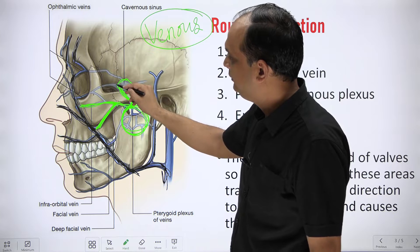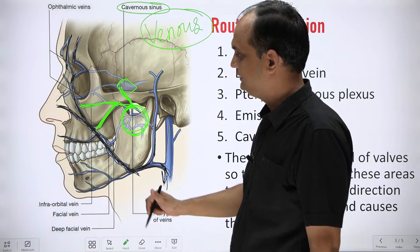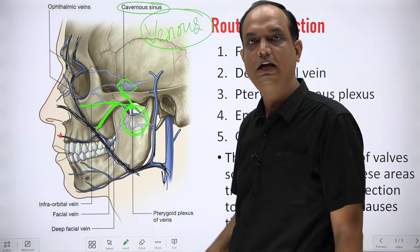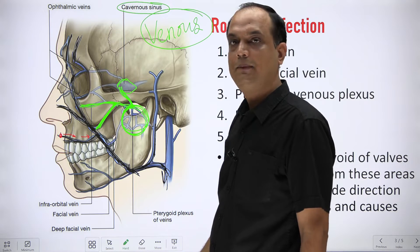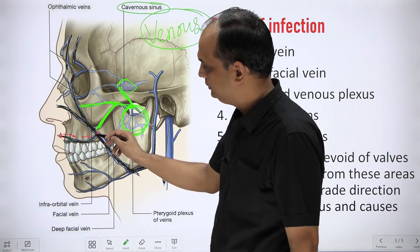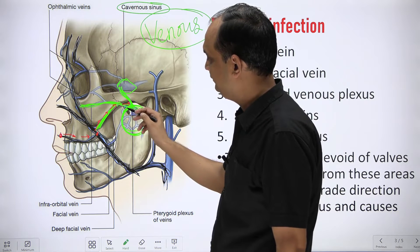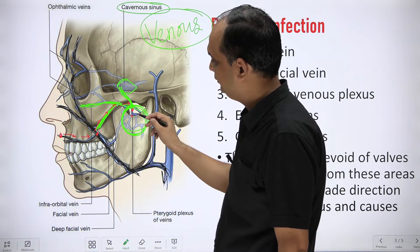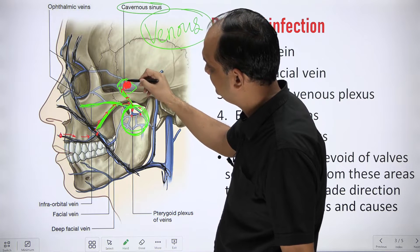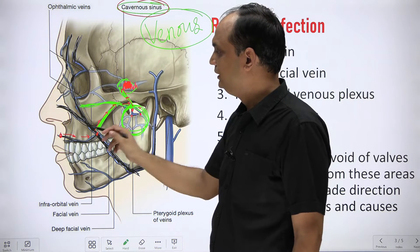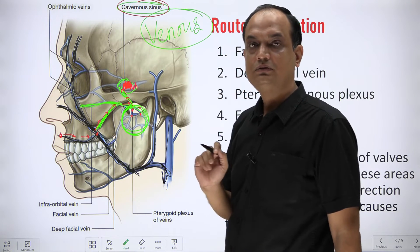From the pterygoid venous plexus, emissary veins connect the extracranial venous plexus to the intracranial dural venous sinus — specifically the cavernous sinus. So the route of infection is: bacteria from the foci enter the facial vein via the upper labial or buccal vein, travel to the deep facial vein, reach the pterygoid venous plexus, ascend through emissary veins, and ultimately reach the cavernous sinus via this retrograde pathway.